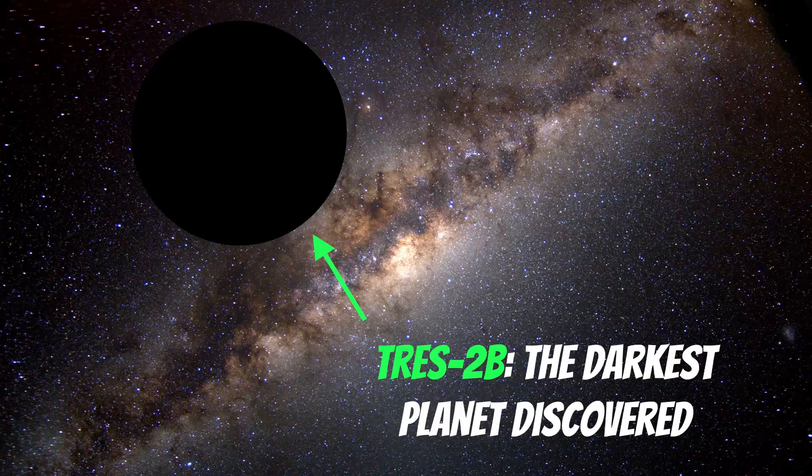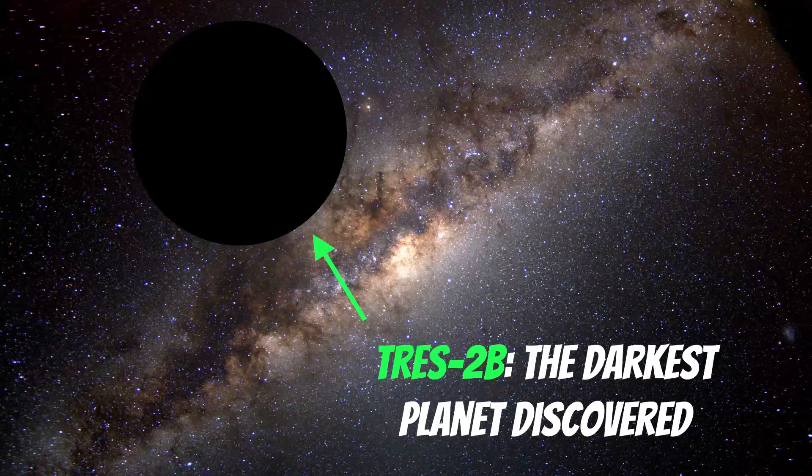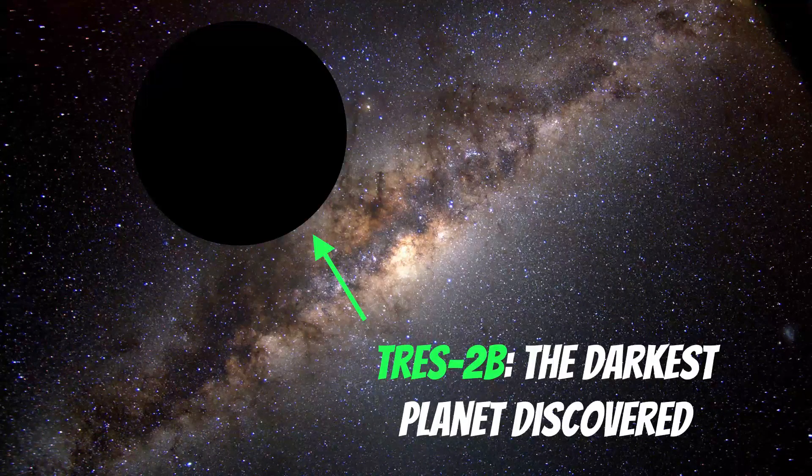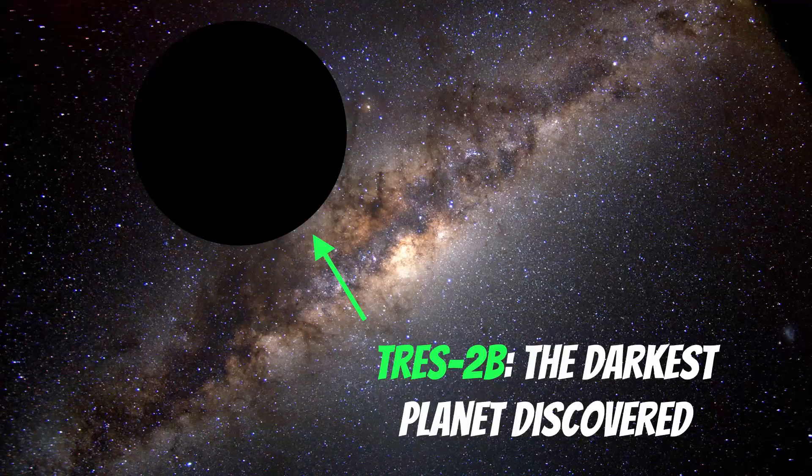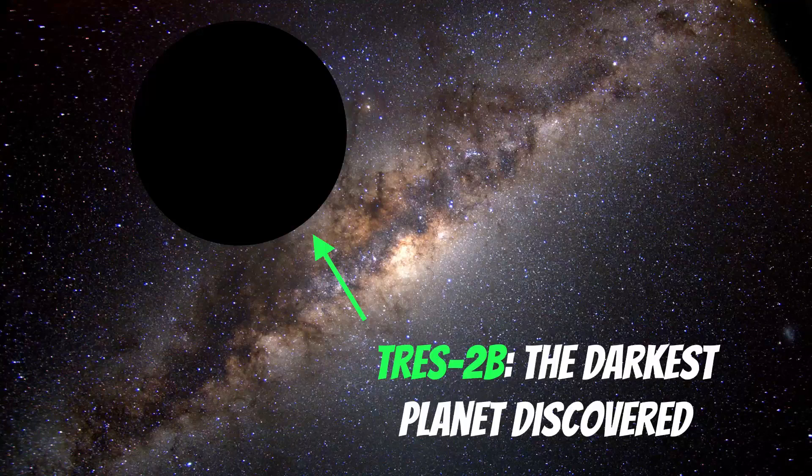Of the thousands and thousands of exoplanets discovered so far, TRES-2b is the darkest one we've discovered. In this video we're going to look at the planet itself, how it was detected, and why it's the darkest planet out of all those thousands we've found.